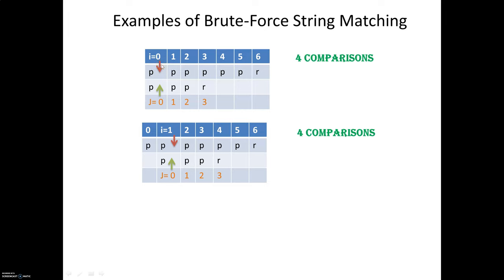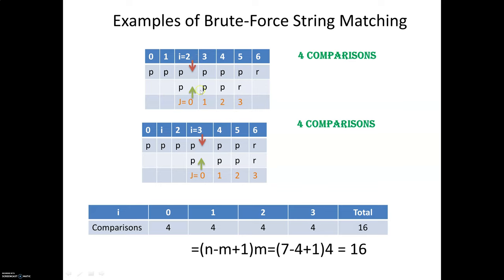Aligning as usual, the first character of the text is aligned with the first character of the pattern. Comparisons begin: all three characters match except the last one. When i equals 0, four comparisons are made and the fourth character mismatches, so the pattern is realigned one position to the right. In the next iteration with i equal to 1, again four comparisons result in a mismatch. When i equals 2, four more comparisons are made. When i equals 3, all characters of the pattern match the text.